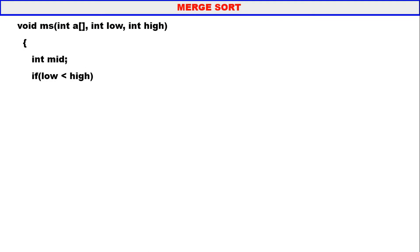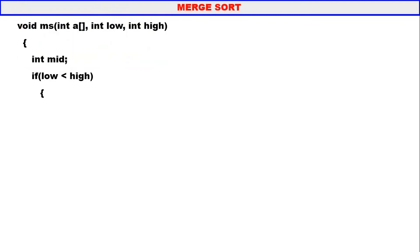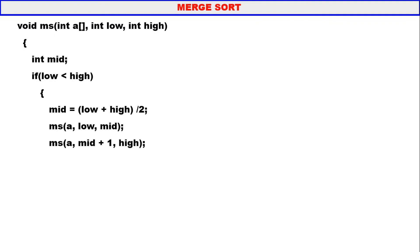We have got the sorted array. When low is less than high, there are more than one elements — the array needs to be divided. Calculate the value of mid, then call the MS procedure recursively for the left part from low to mid, and for the right part from mid+1 to high. After both recursive calls return, call the merge procedure. That's all the merge sort algorithm — very simple, very small.